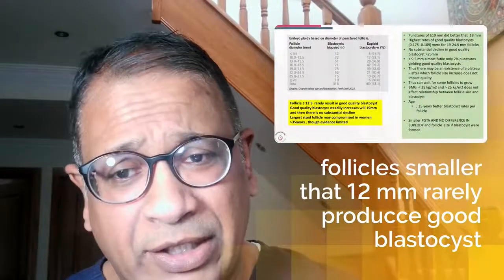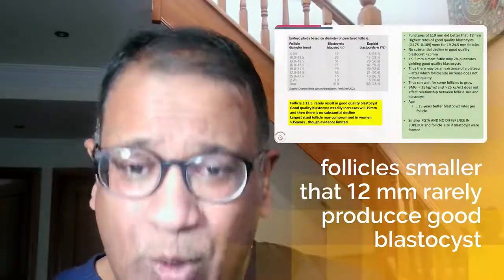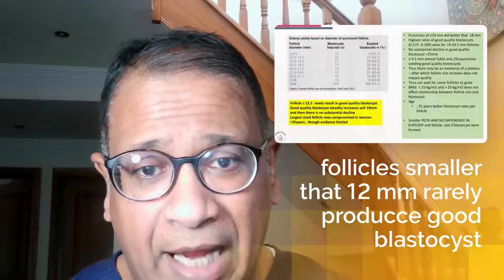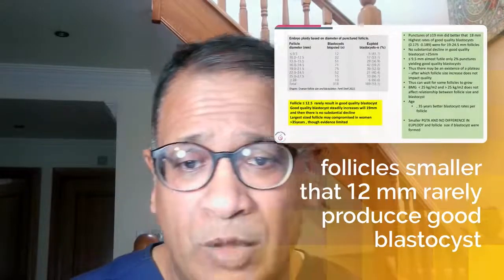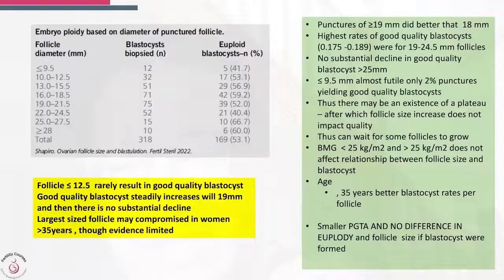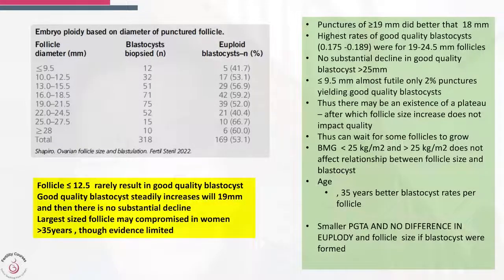This is quite a good study — it gives us insight into what we do every day. In practice, you may be unsure whether to aspirate small follicles or worried about large ones. The data shows that follicles less than 12.5 mm are unlikely to produce good quality blastocysts, blastocyst quality increased up to 19 mm, and beyond 19 mm there was no substantial decline.